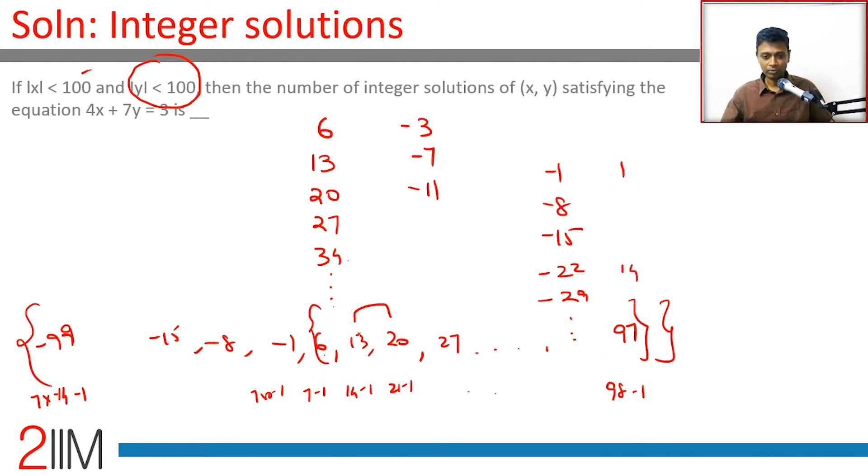There are 14 of them here, starting from 0 to minus 15 - there are 15 of them. 14 positive values, 15 negative values - 29 values are there. Remember, we need to worry only about mod x being less than 100. Mod y less than 100 is not really a consideration. If mod x is less than 100, mod y will happen to be less than 100. We don't have to worry - x jumps in steps of 7, y jumps only in steps of 4. So when x crosses 100, y will be comfortably within 100.